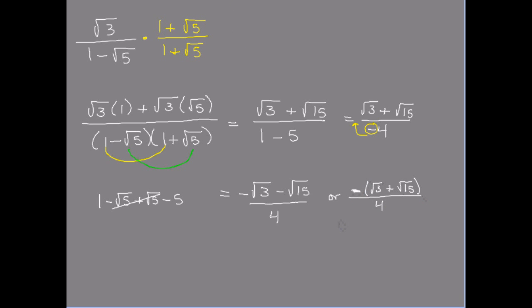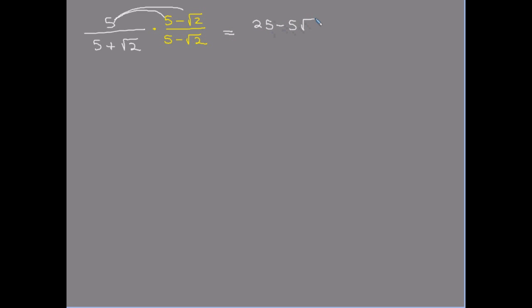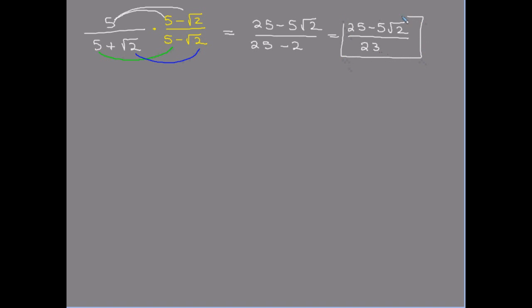Let's try: five over five plus the square root of two. I multiply by the conjugate: five minus the square root of two over five minus the square root of two. The numerator gives me twenty-five minus five times the square root of two. For the denominator, the first terms give five times five is twenty-five, and the last terms give minus two. So I get twenty-five minus five times the square root of two over twenty-three. This is not going to reduce, so that's my final answer.